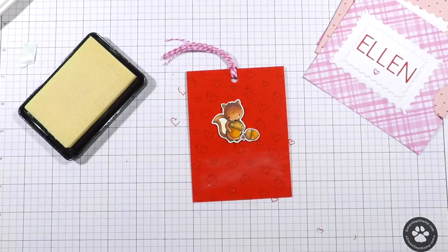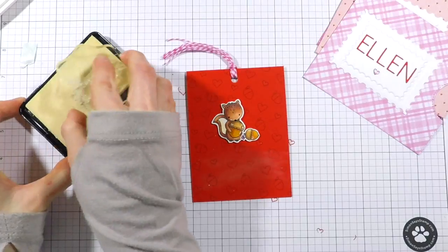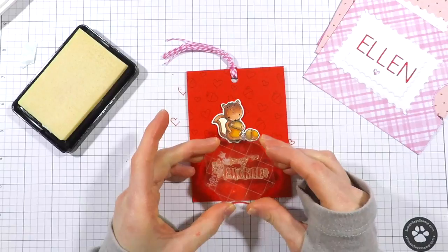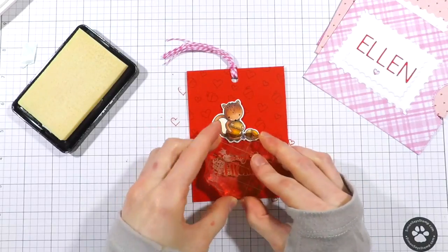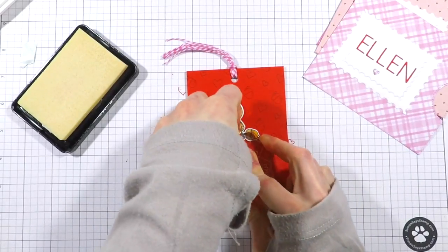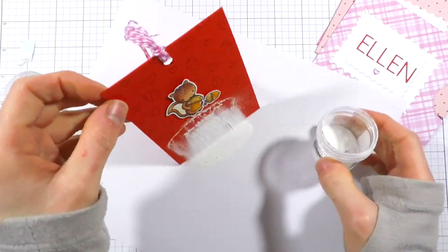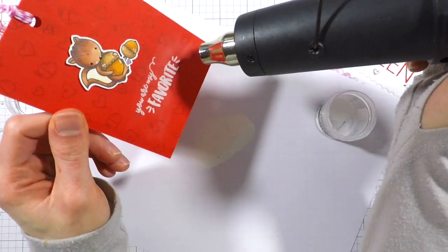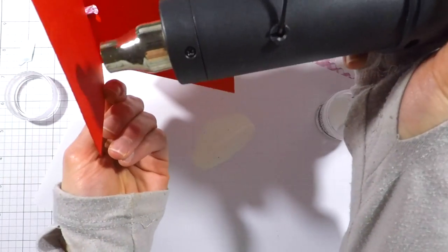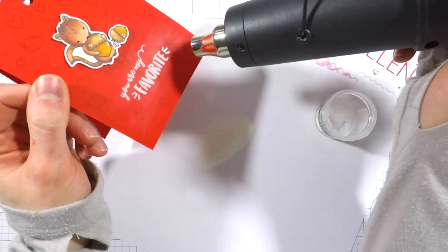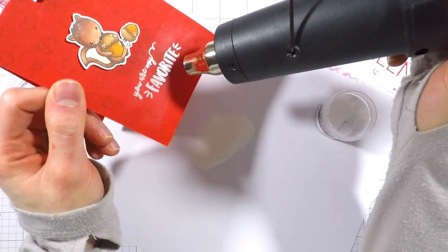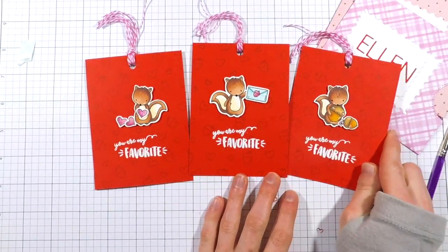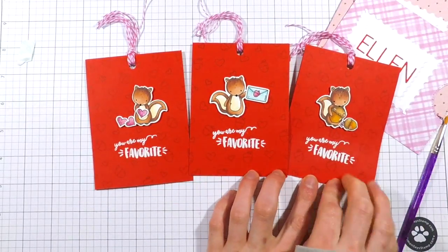Next I added my little squirrels onto the card bases using some foam tape. Now I'm taking one of the sentiments from the My Favorite Nut stamp set, this one says 'You Are My Favorite' and I think it is so cute. This is what makes these cards perfect for not only Valentine's Day but they can be used year round. Love cards are something that I think people love getting and it lets someone know that I love you and I really want to send you a note. It really picks someone up and just brings a smile to everyone's face.